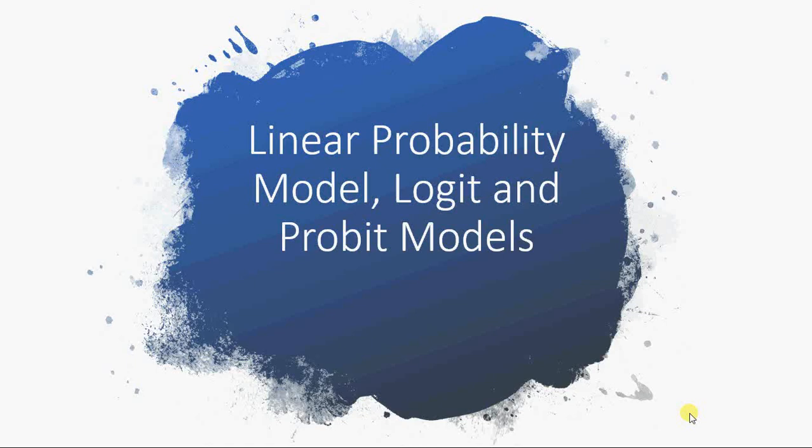First of all, why are we limited dependent variables? Linear probability model is what we use in the least square model which is multiple linear regression, simple linear regression or non-linearity variables. Logit and probit models are slightly different. We will talk about why we use logit and probit models and why we cannot live with linear probability models.